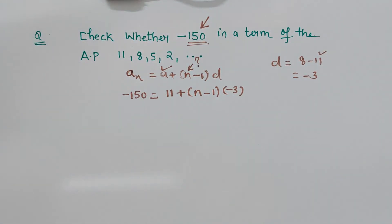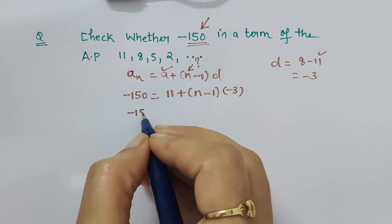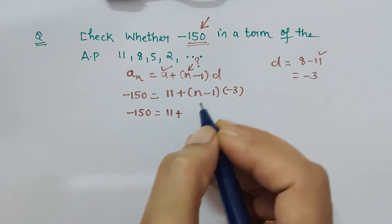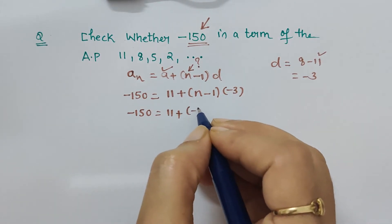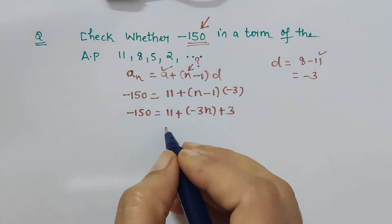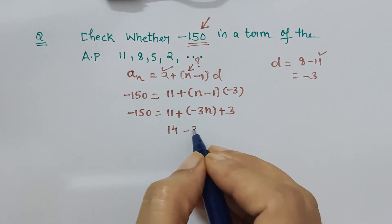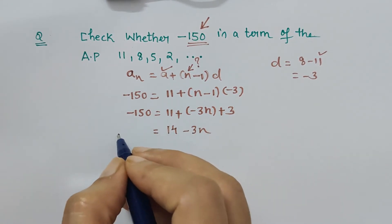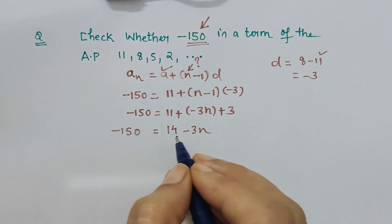So it is -3. Now let's simplify it. -150 equals 11 plus -3n, which is -3n plus 3. So 11 plus 3 is 14, minus 3n equals -150.